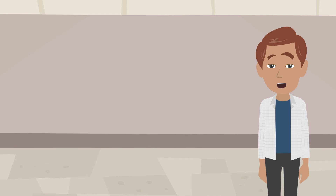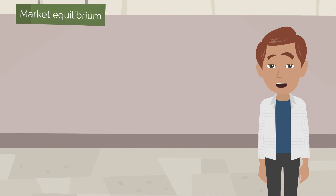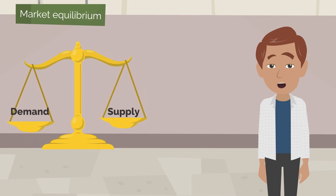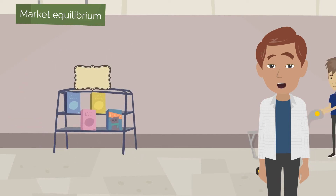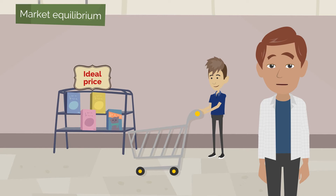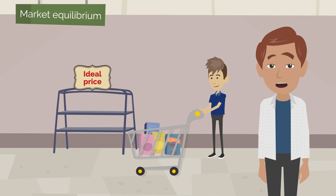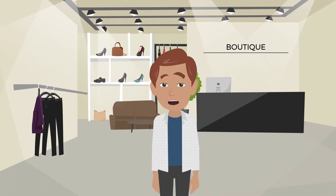Demand is also closely related to the concept of market equilibrium. It is a point where the demand equals the supply — that is, the amount of a good that the seller is able to offer. In a state of market equilibrium, a product achieves a price that can be described as ideal. It satisfies both the consumers, because they are willing to buy the product for it, and the producers, who can easily sell the products they have.